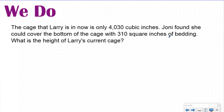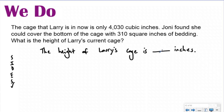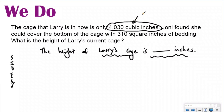Now our 'We Do' problem — go ahead and do this one in your notes with me. The question says: the cage that Larry is in now is only 4,030 cubic inches. Joanie found she could cover the bottom of the cage with 310 square inches of bedding. What is the height of Larry's current cage? My statement is going to say: the height of Larry's cage is blank inches. When I go back and read, it says the cage is 4,030 cubic inches — because it's cubic units, that number must be my volume.